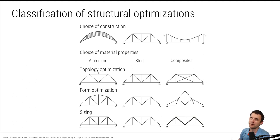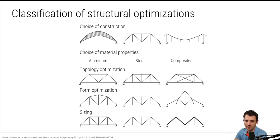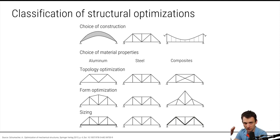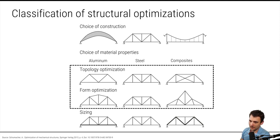Topology optimization gives you real freedom — you can create new holes or remove some. Topology optimization also includes form and sizing optimization because it defines where the nodes are and how thick the structures are. So topology optimization has the highest potential of all. Form optimization is below that, and sizing is below even that — sizing just changes minor details, but can still have an influence. The focus for this presentation is on topology and form optimization.